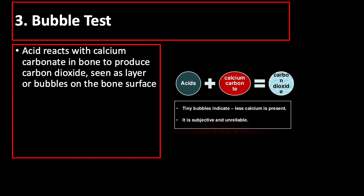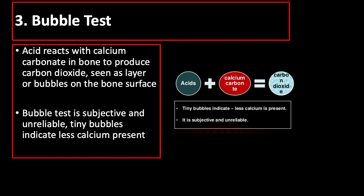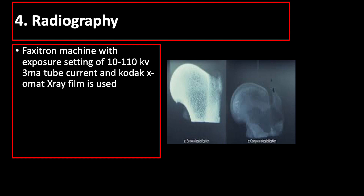Another test is the bubble test, where acid reacts with calcium carbonate in bone to produce carbon dioxide, which is seen as a layer of bubbles on the bone surface. However, the bubble test is subjective and unreliable, and the presence of tiny bubbles indicates less calcium present. The last method to check the endpoint of decalcification is radiography or X-ray, which is best for large specimens.